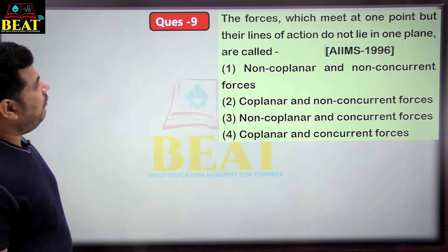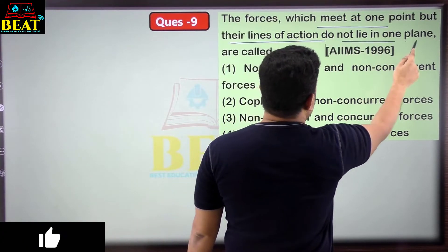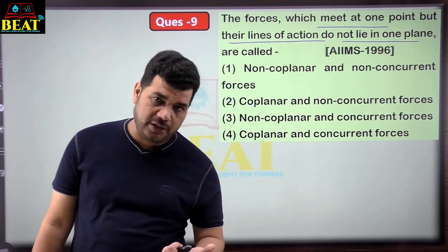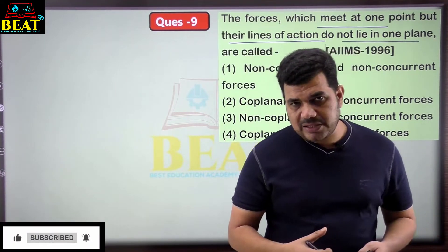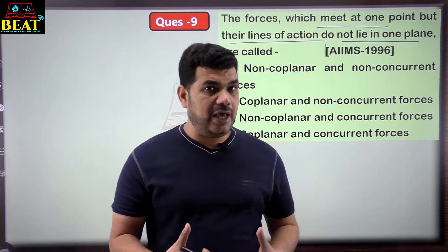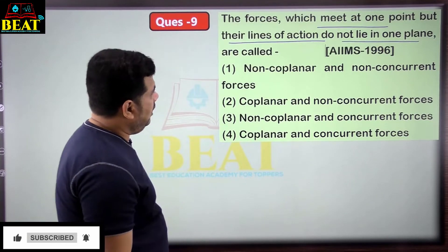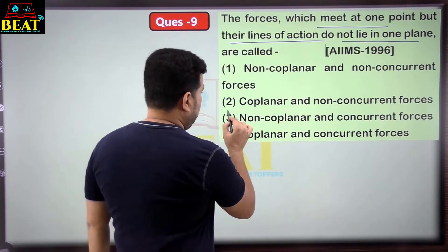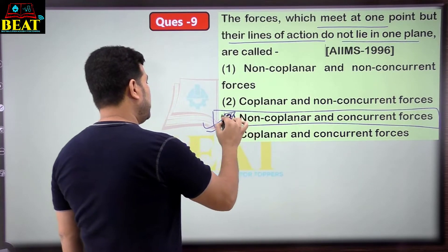Question 9: forces which meet at one point but their lines of action do not lie in one plane. If they were in one plane — coplanar; if not in one plane — non-coplanar. Meeting at one point — concurrent; not meeting at one point — non-concurrent. The question says they meet at one point so concurrent, and non-coplanar. Answer is option 3.